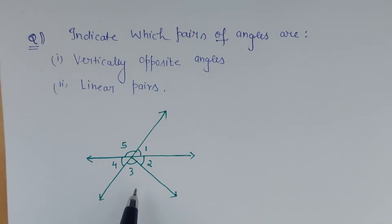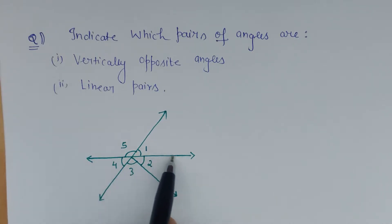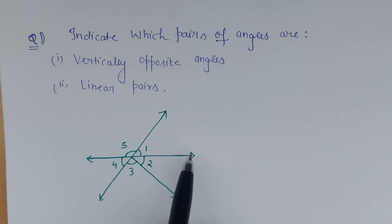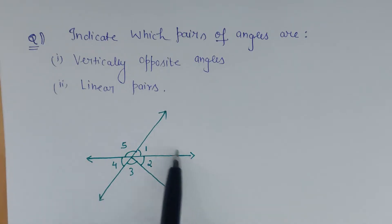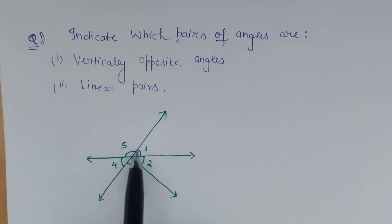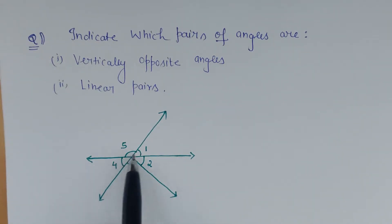In this figure, we have to indicate which are those angles, so first we have to locate the straight lines which are intersecting each other. Here we can see this is one straight line and this is another straight line which are intersecting each other, and the angles opposite to them will be vertically opposite.